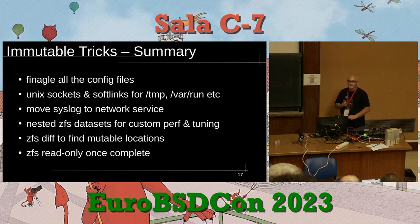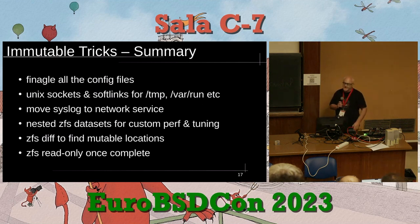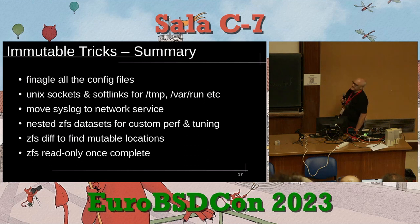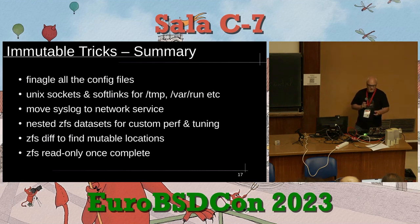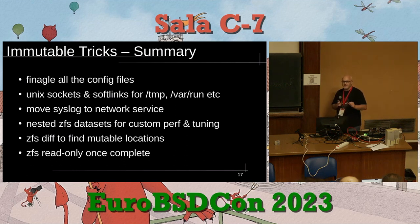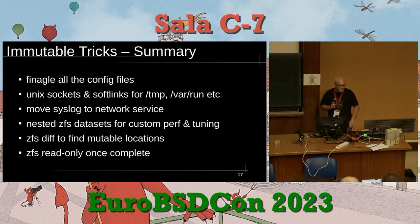For making things immutable — for jails and the operating system — it's really the same six or seven steps every time: change config files to put writable stuff in writable places; use Unix sockets and soft links for temp, var/run, and similar; move syslog to a network service if it's a jail; use nested ZFS datasets to tune performance; use `zfs diff` to find mutable locations; set the main dataset to ZFS read-only; and use nosuid, noexec flags on mounts for writable locations to make it harder for attackers.